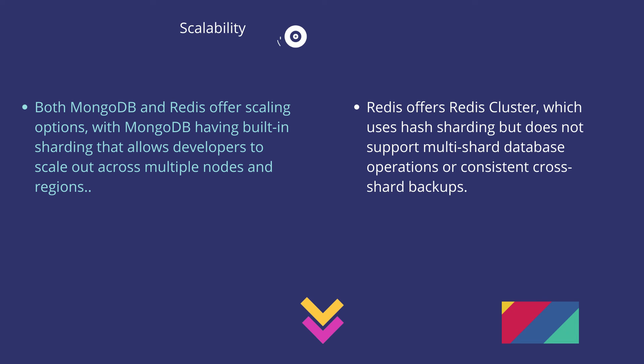Coming to the scalability side, both MongoDB and Redis offer scaling options. MongoDB has built-in sharding that allows developers to scale out across multiple nodes and regions. On the other hand, Redis offers Redis Cluster, which uses hash sharding but does not support multi-shard database operations or consistent cross-shard backups.